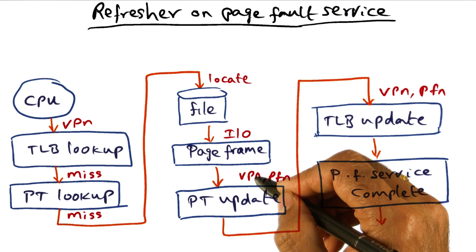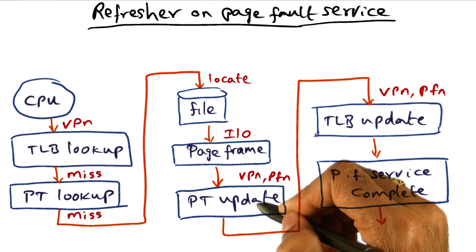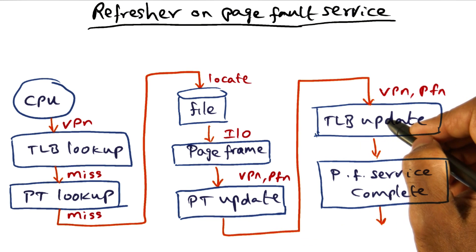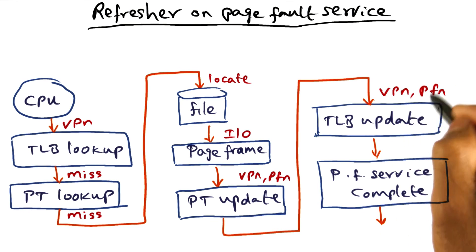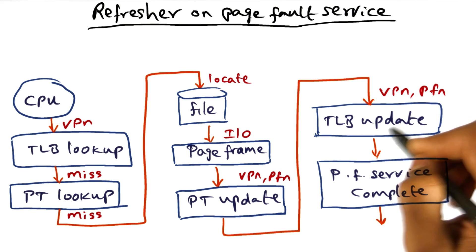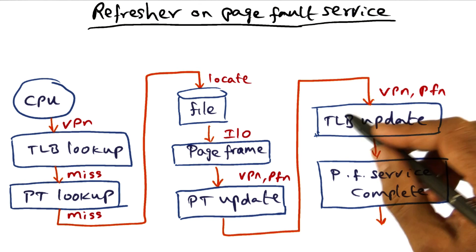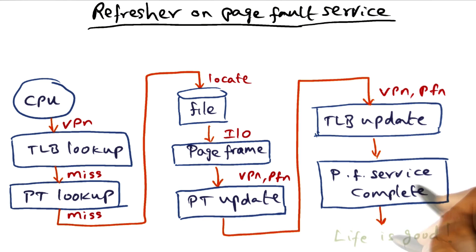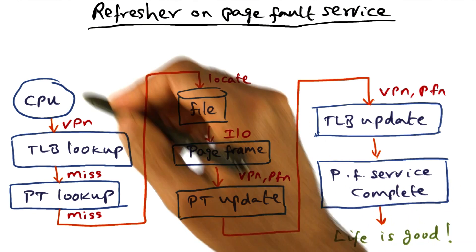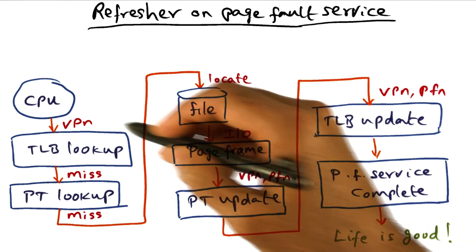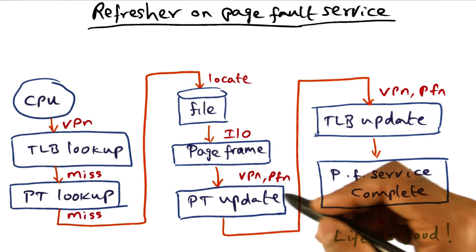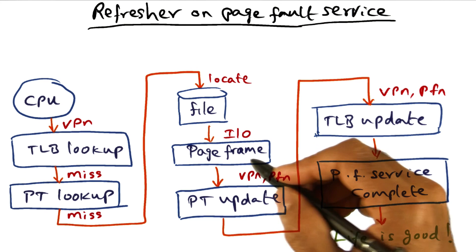The page table is updated to establish the mapping between the virtual page and the physical frame number. Then the TLB is also updated to reflect the new VPN-to-PFN mapping. Once the TLB has been updated, the page fault service is complete. That's the whole workflow for mapping a virtual page to a physical frame when there is a miss.